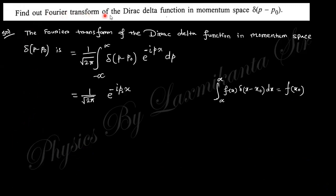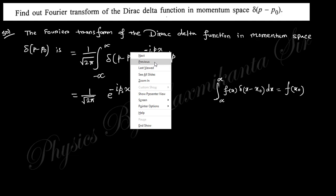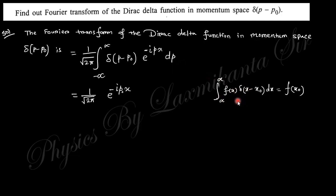The next question: find the Fourier transform of the Dirac delta function δ(x) in momentum space. The Fourier transform of δ(x) is given by (1/√2π) ∫ δ(x) e^(±ikx) dx. Using the sifting property of the Dirac delta function — ∫ f(x) δ(x - x₀) dx = f(x₀) — and setting x₀ = 0, we obtain the Fourier transform of δ(x) as (1/√2π) e^(±ikx₀).